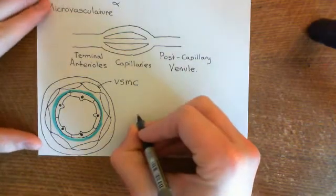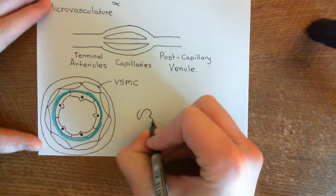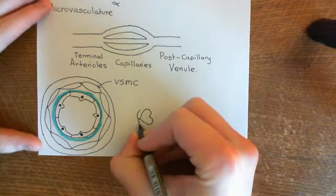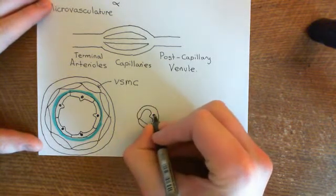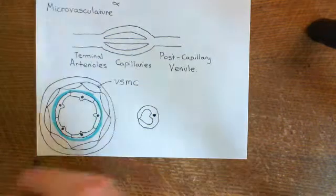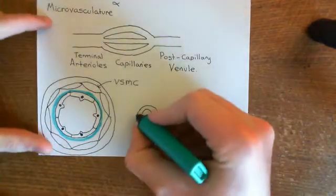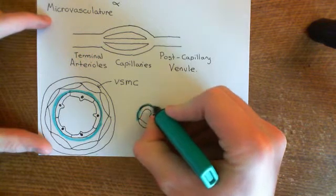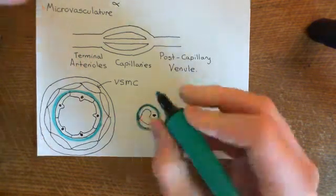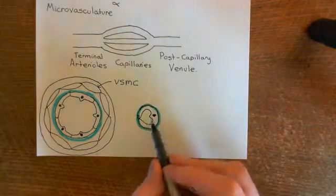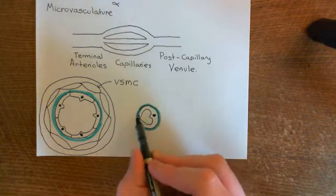Let's now look at the structure of a capillary. Capillaries are tiny little baby blood vessels — they literally are one cell thick. Their entire circumference is made up by a single endothelial cell, and their entire wall consists merely of an endothelial cell with a basement membrane underneath it. Literally, it's an endothelial cell and then a basement membrane underneath.